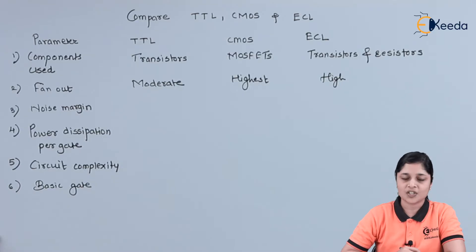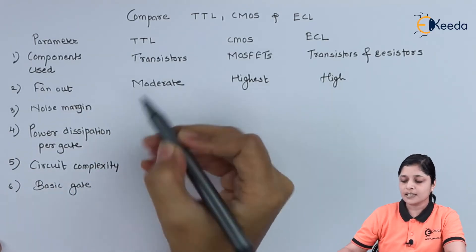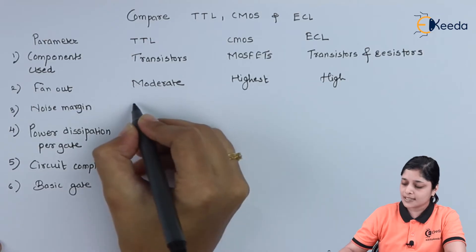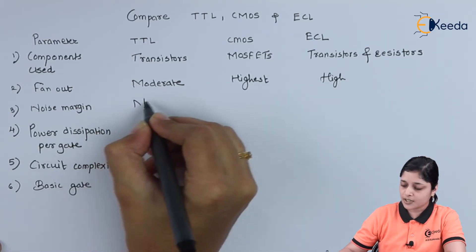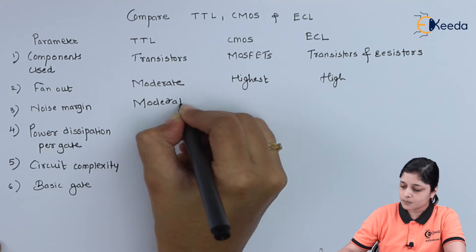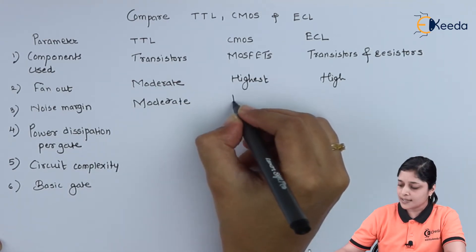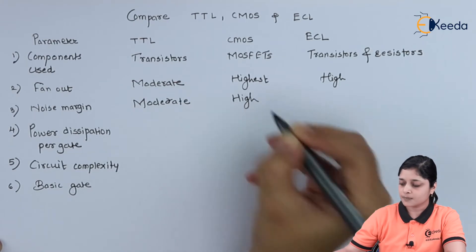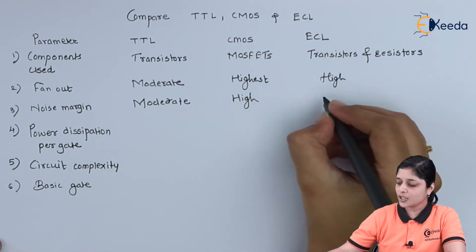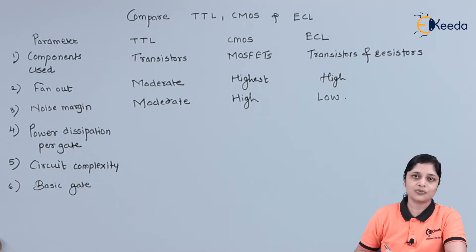The next parameter is noise margin. For TTL the noise margin is moderate, for CMOS it is high, and for ECL it is low.